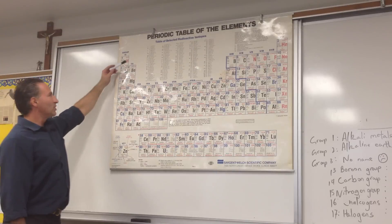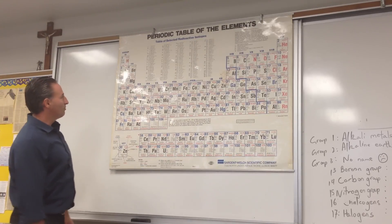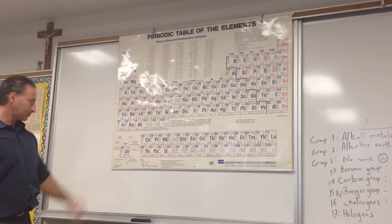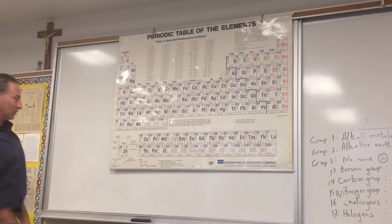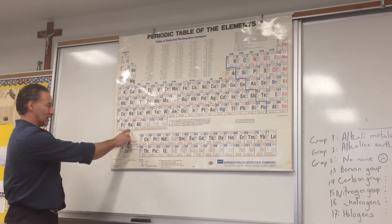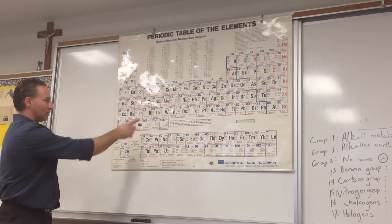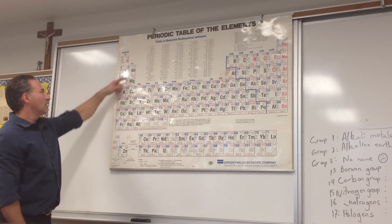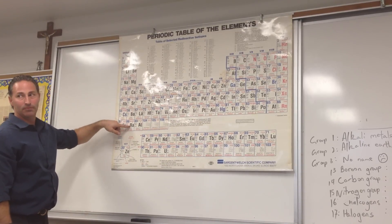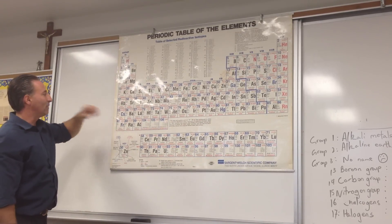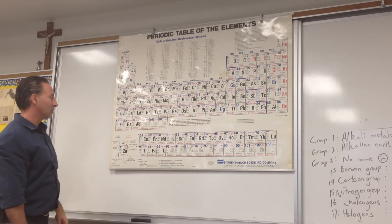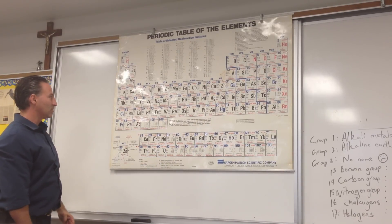Group 2 is called the alkaline earth metals. They typically form a +2 charge — they'll lose two of their S electrons to give you a P6 configuration. To memorize them: Be-Mg-Ca-Sr-Ba-Ra.